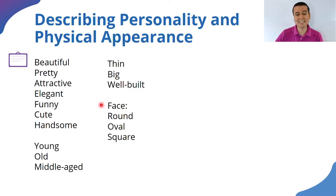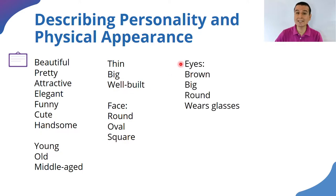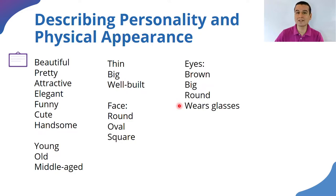If we refer to their face, we could say the person has a round face, oval face, or square face. About their eyes, we can talk about color and say the person has brown eyes, big eyes, or round eyes. We can also note that the person wears glasses — it's not an adjective, but it helps give a better idea of someone's physical appearance.